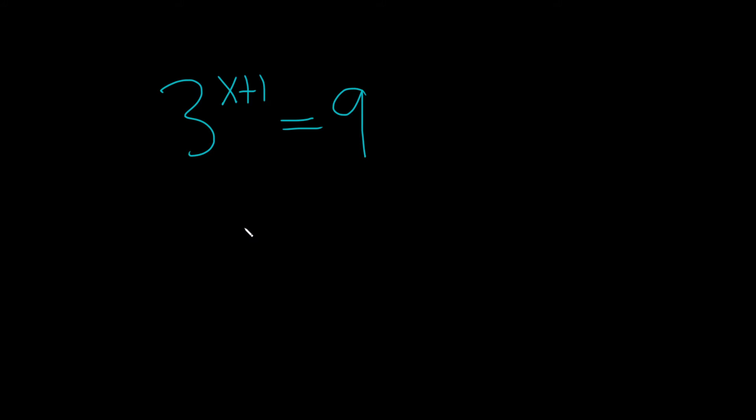So the goal in this problem is to write both sides using the same base. So we want something like this: b to the x equals b to the y. When we have something like this, what we can do is just drop the bases. So we'll get x equals y.